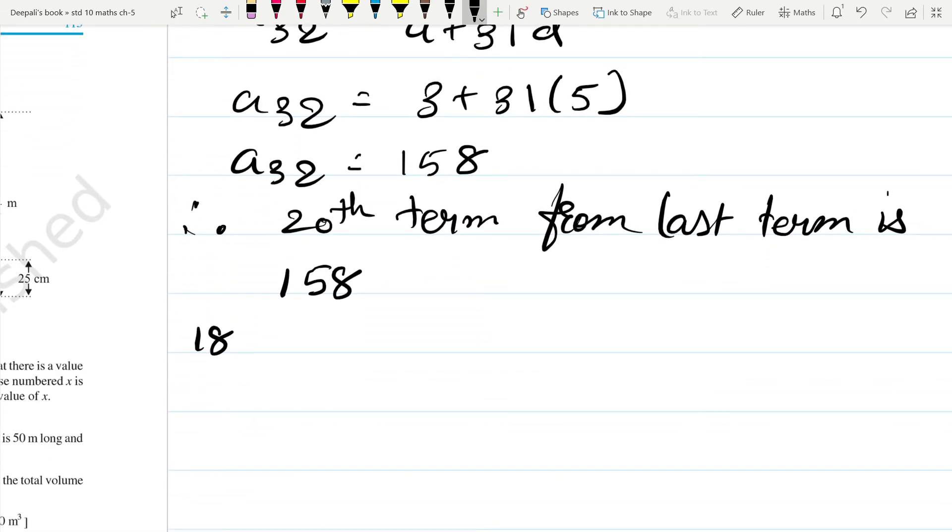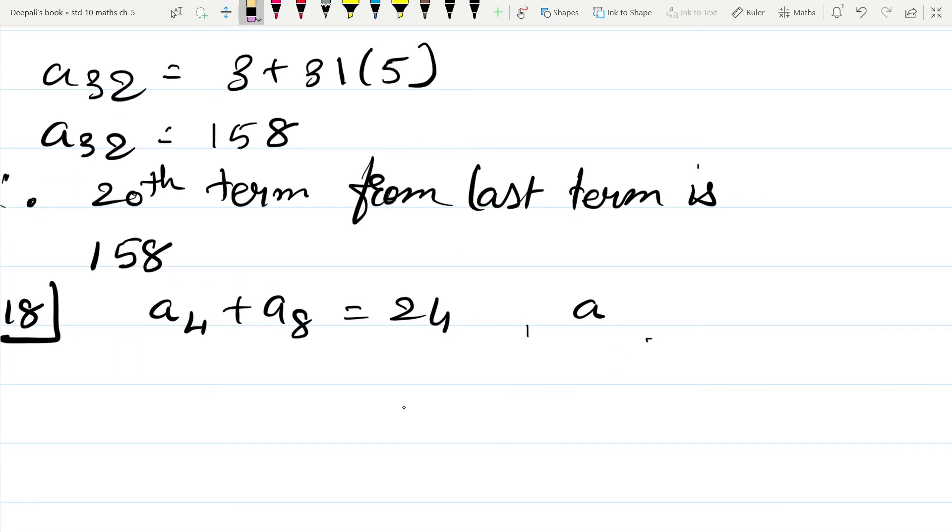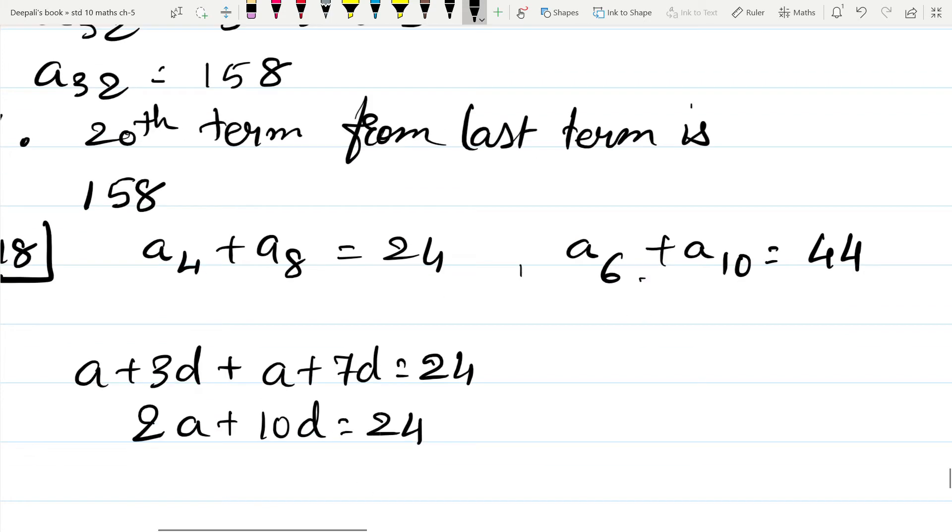Therefore 20th term from last term is 158. Number 18. The sum of the 4th and the 8th term of an AP is 24, that is A4 plus A8 is 24.